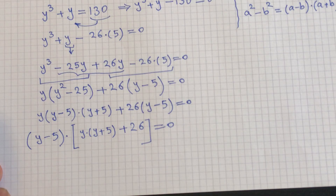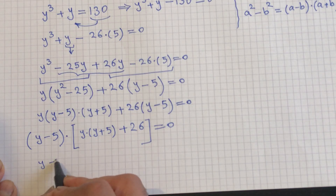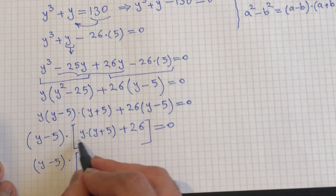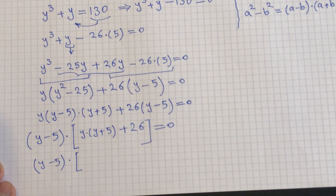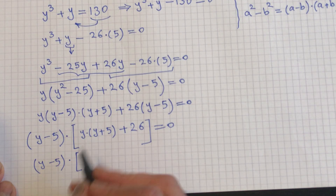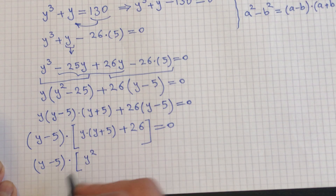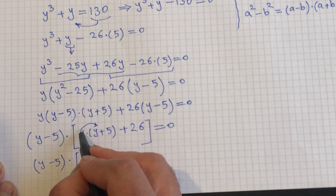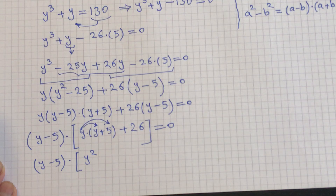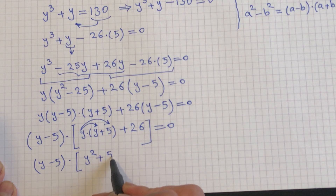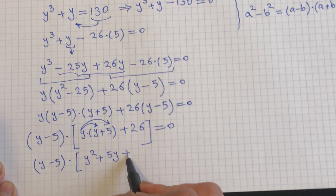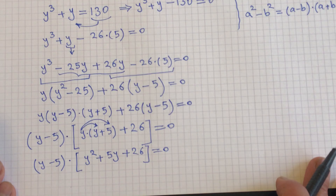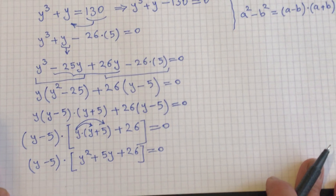Simplifying the bracket: (y minus 5) times (y squared plus 5y plus 26) equals 0. Expanding y times (y plus 5) gives y squared plus 5y, and adding 26 gives the quadratic y squared plus 5y plus 26.